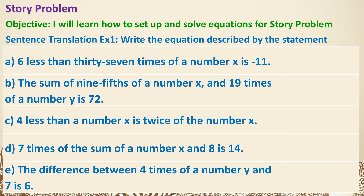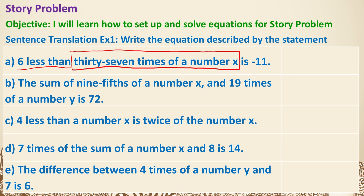We're going to write the equation that describes each of the statements. First one: 6 less than 37 times of a number x is negative 11. We see '6 less than' — that means we're comparing something to 37 times of a number x, which is 37x. When it's 6 less than that, we subtract 6. The word 'is' is the equal sign, so it equals negative 11.